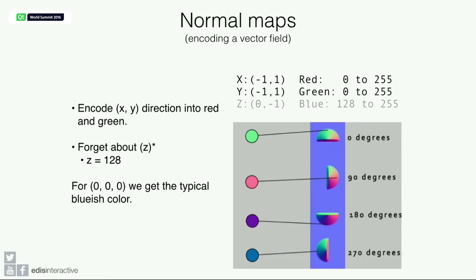You can see that the color green represents the top direction, and the darker blue represents left. We forget about the Z channel. In normal maps, you represent the tangent in Z, but we basically put Z to 0, which translates into 128. For the origin (0, 0, 0), we get the typical bluish color you can see in the background of these images. So this is just a way to represent 2D vectors using colors — red and green.